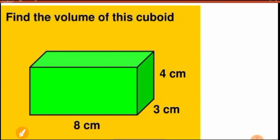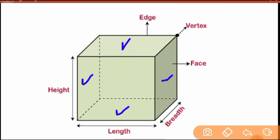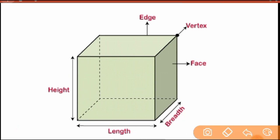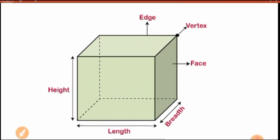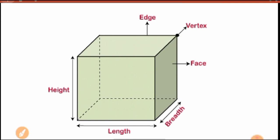Now about a cube — a very special thing is that all the faces are the same, meaning all side lengths are the same. A cube has 6 faces, 12 edges total, and 8 vertices. Length, width, and height are all equal in a cube.